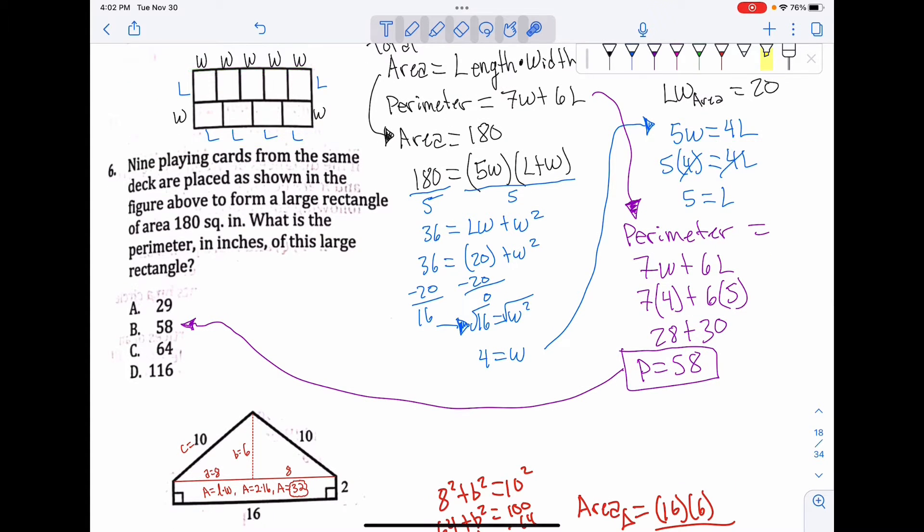Now we just plug it in. w equals 4, these fours cancel out, l equals 5. Remember our perimeter formula: 7w plus 6l. We plug it in: 7 times 4 is 28, 6 times 5 is 30. 30 plus 28 is 58, so p equals 58 inches. That is our answer.